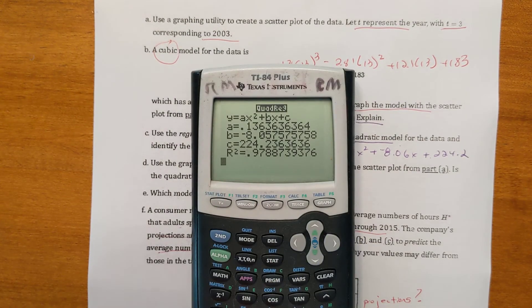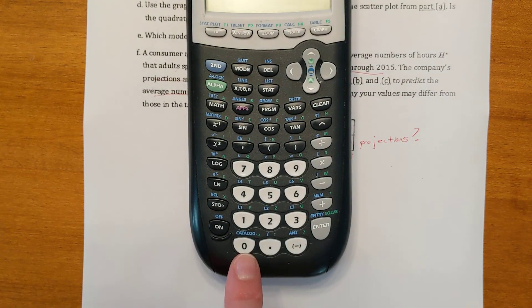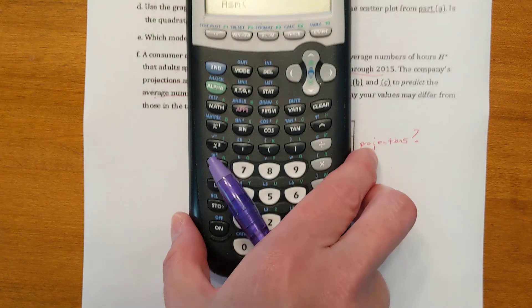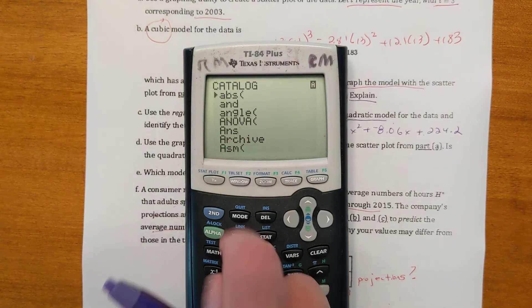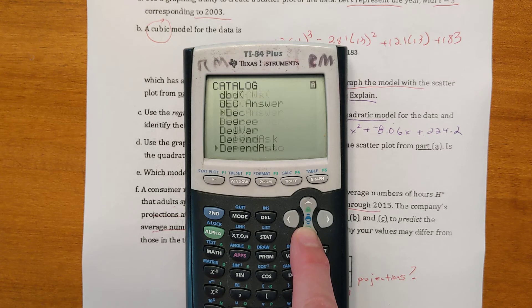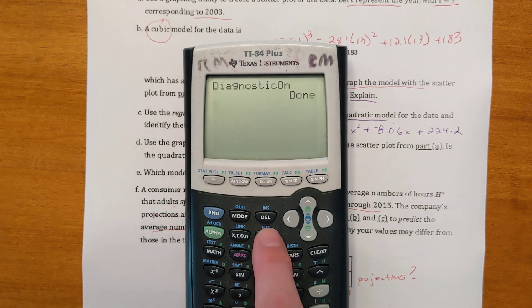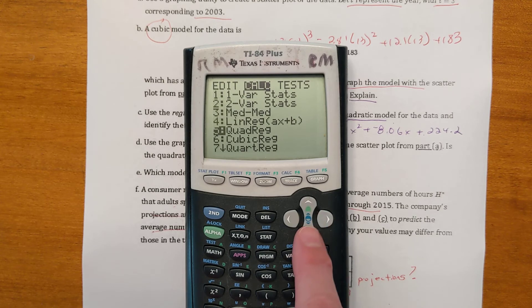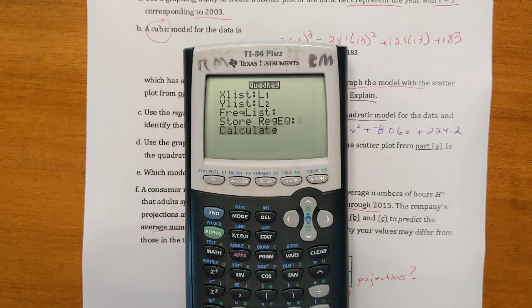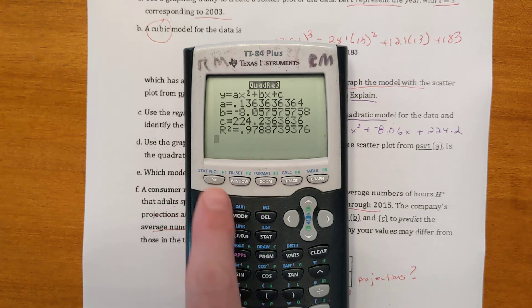If you're not getting the r squared values on your calculator, you got to go to catalog, which is above the zero. Hit second, zero, and it takes you to the catalog. You scroll down to get to the word diagnostics. You want to turn your diagnostics on. Hit enter on diagnostics on and enter again. It says done. So they're on then. When you go back to stat, calculate the quadratic model, go down and calculate, and it will give you the r value if it didn't give it to you before.